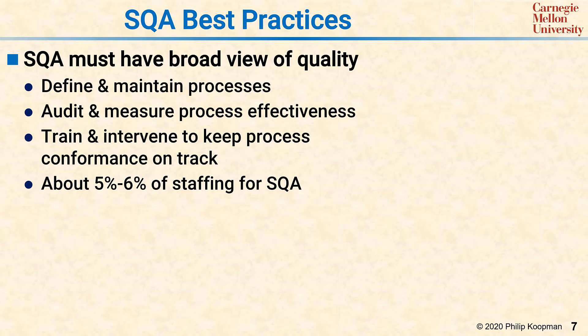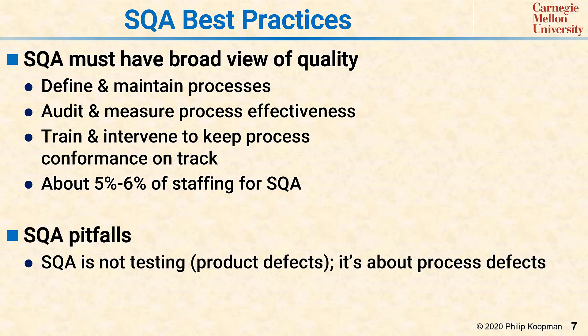Here are some common SQA pitfalls. SQA is not testing — people say 'software quality,' and assume that means testing. Testing matters, but SQA is something else. SQA is not about whether the software quality is directly measured to be good, but rather about whether your software process quality is good. Because good software process quality — in other words, good process — is highly predictive of good quality software.